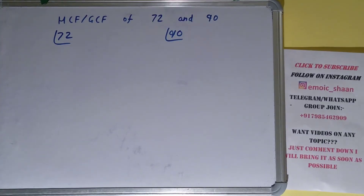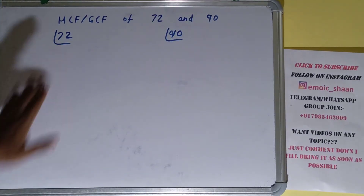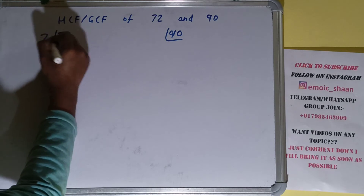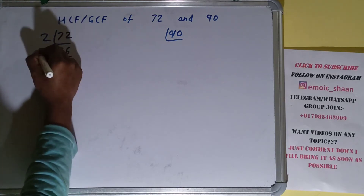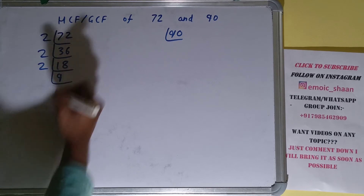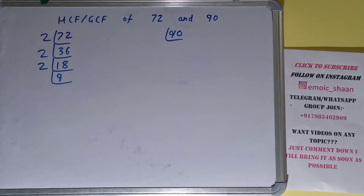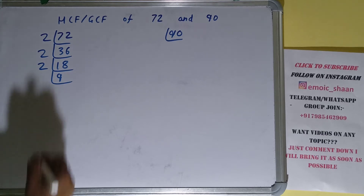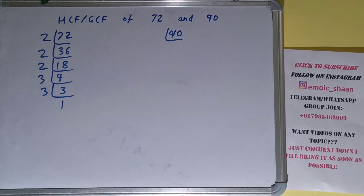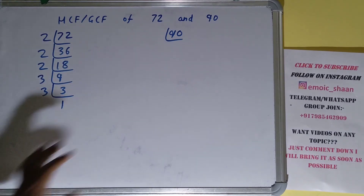We need to prime factorize each of them. We'll start with the number 72 and check with the lowest prime number, which is 2. Is 72 divisible by 2? Yes it is, and we'll have 36. 36 is again divisible by 2, we'll have 18. 18 is again divisible by 2, we'll have 9. Is 9 divisible by 2? No, so we'll check with the next lowest prime number, which is 3. Is 9 divisible by 3? Yes it is, and we'll have 3. 3 is again divisible by 3, we'll have 1. So we are done with 72.